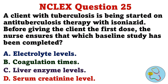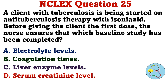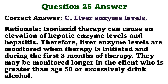A client with tuberculosis is being started on anti-tuberculosis therapy with isoniazid. Before giving the client the first dose, the nurse ensures that which baseline study has been completed? A. Electrolyte levels. B. Coagulation times. C. Liver enzyme levels. D. Serum creatinine level. The correct answer is C: liver enzyme levels. Isoniazid therapy can cause an elevation of hepatic enzyme levels and hepatitis. Therefore, liver enzyme levels are monitored when therapy is initiated and during the first three months of therapy. They may be monitored longer in the client who is greater than age 50 or who excessively drinks alcohol.